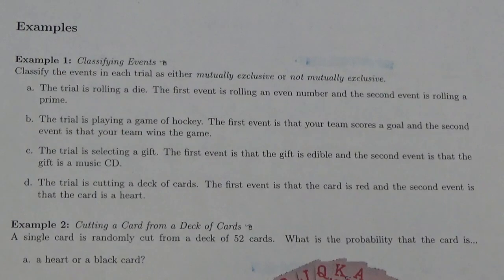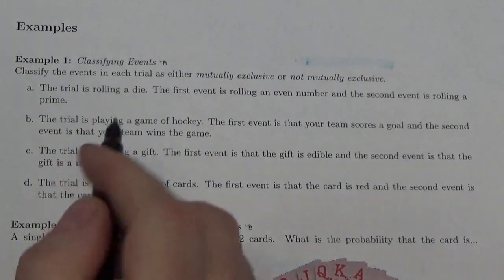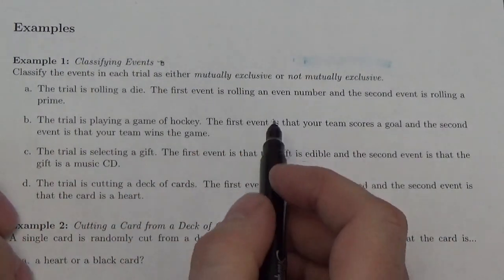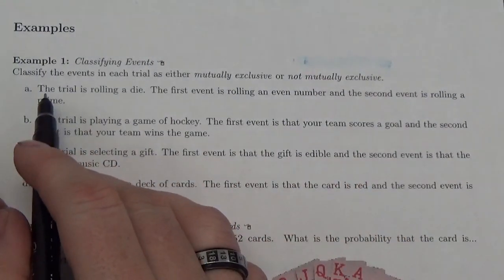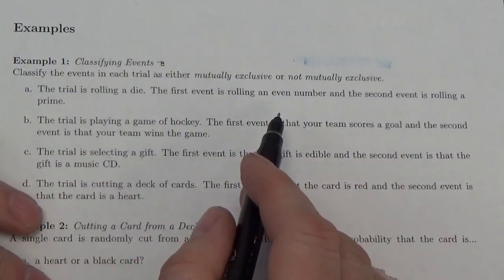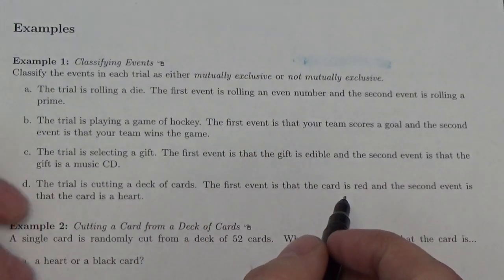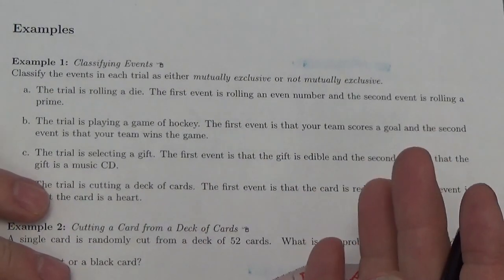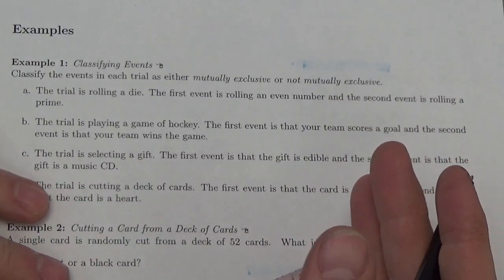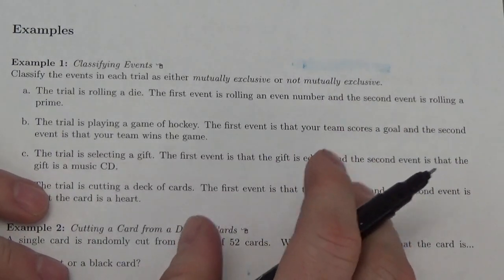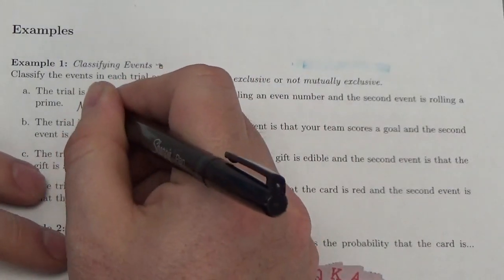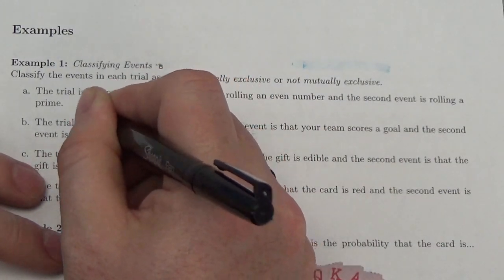For this first question, we're classifying events as mutually exclusive or not. The trial is rolling a die: event one is rolling an even number and event two is rolling a prime. Is it possible to roll an even prime? Yes — two is the only even prime — so these are not mutually exclusive.